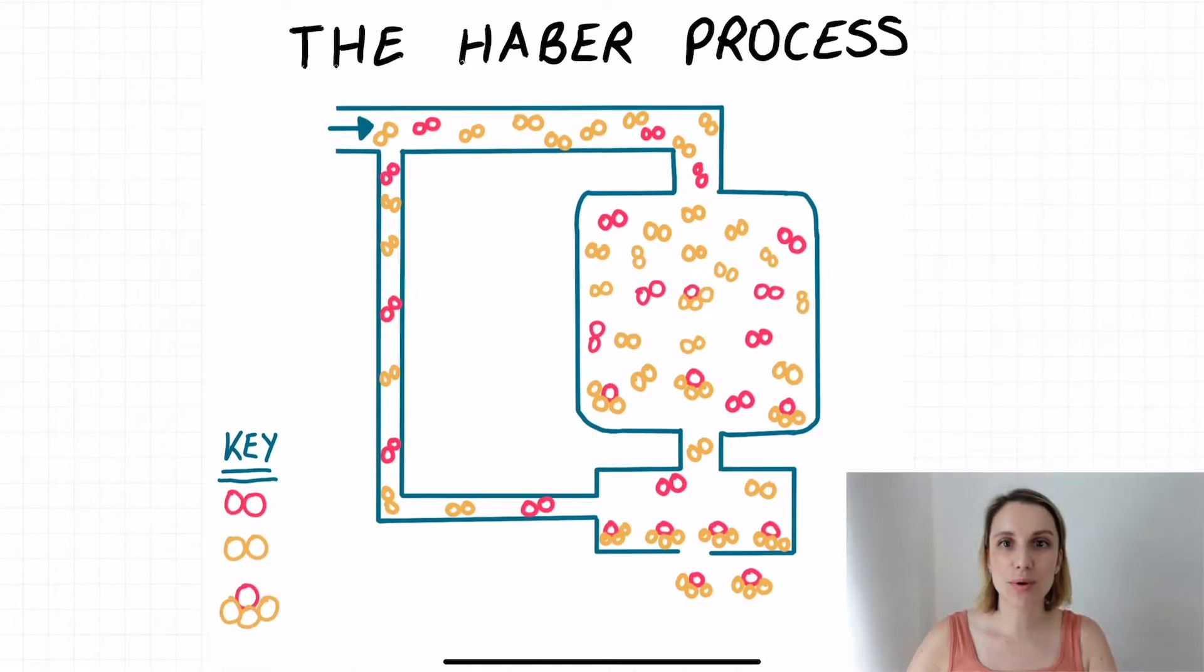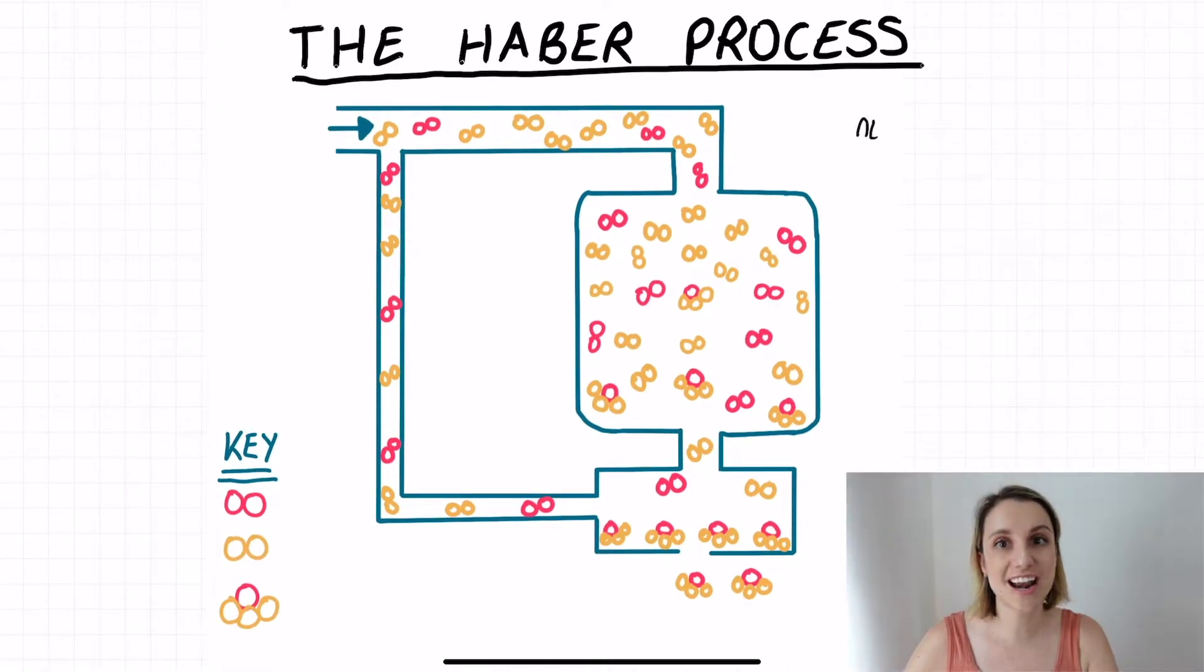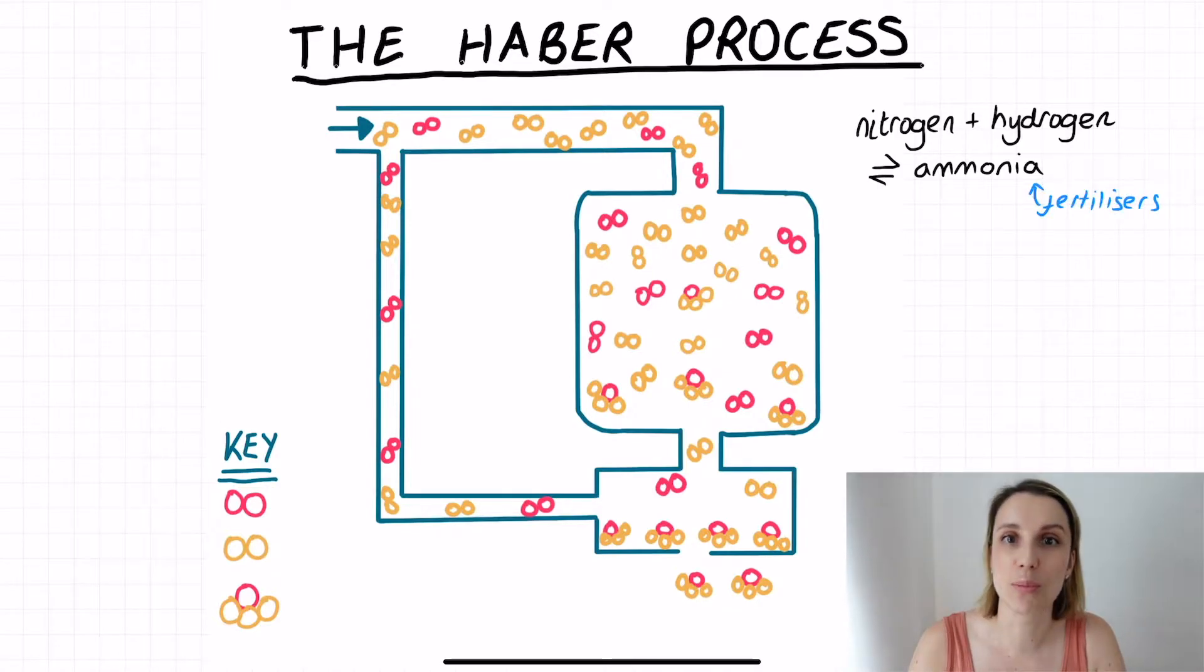The Haber process is the way we make ammonia from nitrogen and hydrogen. This is a really important process because we use ammonia in the production of fertilizers which is super important for maintaining our global population.